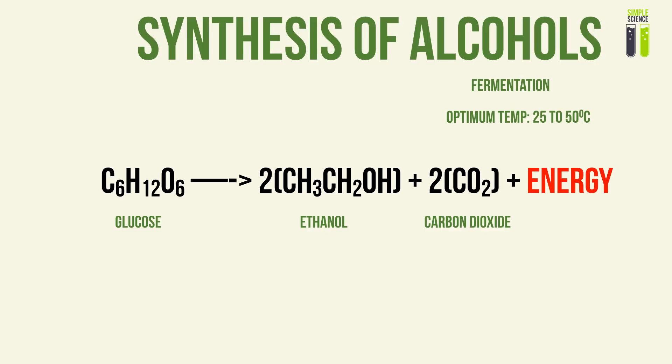Now let's look at the synthesis of alcohols — how we can create them. In daily life you might encounter fermentation. This is when glucose ferments into alcohol. We introduce yeast as a catalyst into glucose at an optimum temperature of 25 to 50 degrees Celsius. Glucose then reacts to form ethanol, carbon dioxide, and energy — whereby energy is stored as ATP.